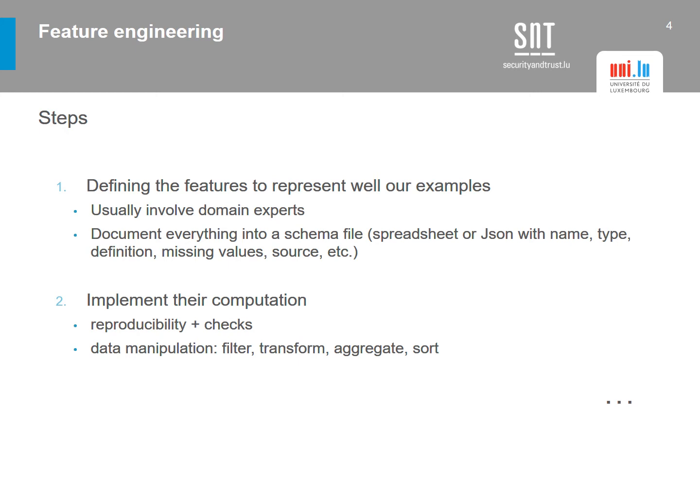Another important underlying step is to document all the features we have designed. We can do so by creating a spreadsheet or a JSON file, filling in the feature names, their types — whether categorical or numerical — whether they have missing values and what those mean, the source of data, and so on. It is really important to document this because we may forget later what it corresponds to, and it is useful for domain experts to know which features are being utilized and for explainability purposes. Documentation is a good practice.